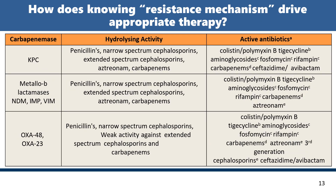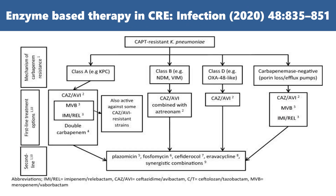How does this resistance information help? For example, if it is KPC, the hydrolytic activity covers penicillins, narrow-spectrum cephalosporins, aztreonam, and carbapenems. The active antibiotics available include polymyxins, tigecycline, aminoglycosides, fosfomycin, rifampicin, and ceftazidime-avibactam. Molecular diagnostic tests such as MALDI-TOF and whole-genome sequencing provide information on potential resistance detections.